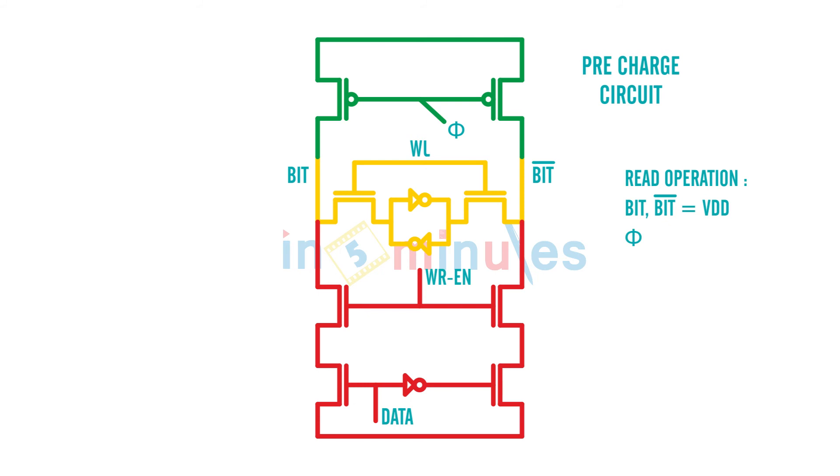When phi is equal to 0, what's going to happen is my transistors P3 and P4 both will be on, and it will make my bit and bit bar to VDD. These are both going to VDD during the read operation because of phi equal to 0, and this is the work done by my precharge circuit. Now for the write operation, remember bit and bit bar are still at VDD. This node is at VDD and so is this.